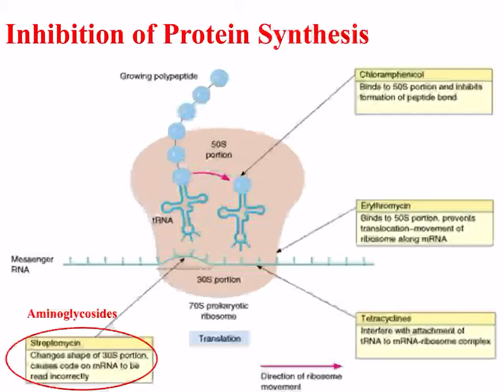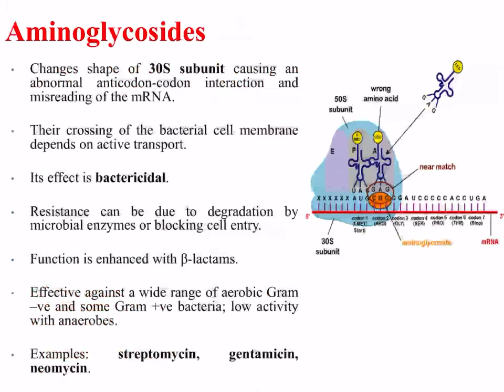Our final group targeting protein synthesis are the aminoglycosides, which act by targeting the 30S ribosome subunit, as highlighted in the diagram. Aminoglycosides act by changing the shape of the 30S subunit, causing an abnormal anticodon-codon interaction and misreading of the mRNA, resulting in incorrect amino acids being incorporated. Their crossing of the bacterial cell membrane depends on active transport. Their effects are often bactericidal; resistance can arise due to degradation by microbial enzymes or by blocking cell entry. Their function is enhanced with the beta-lactam drugs. Examples include streptomycin, gentamicin, and neomycin.